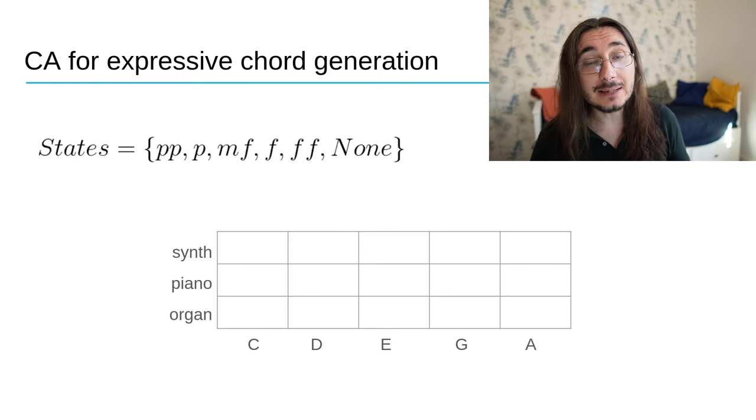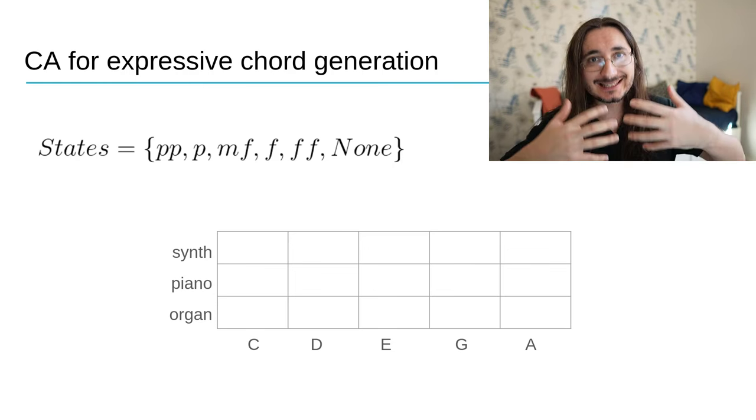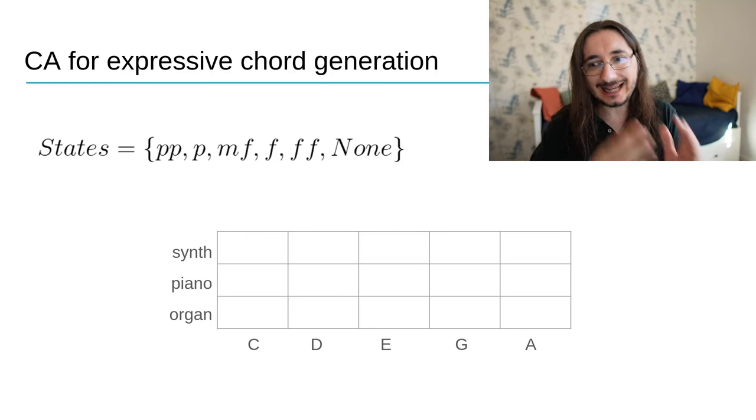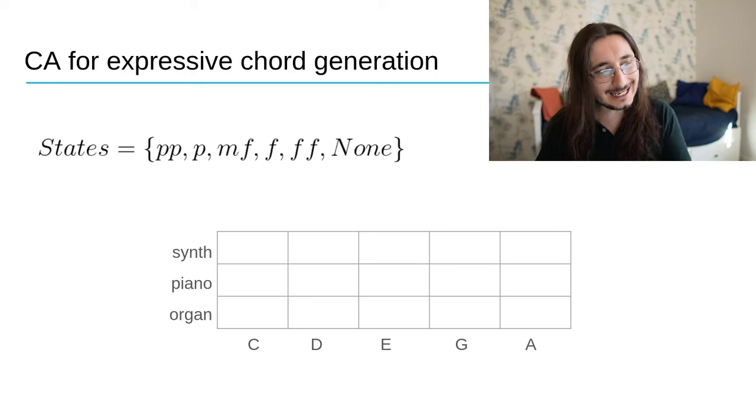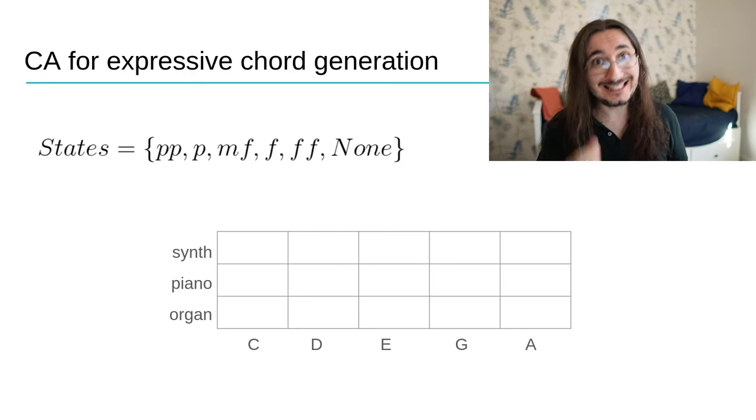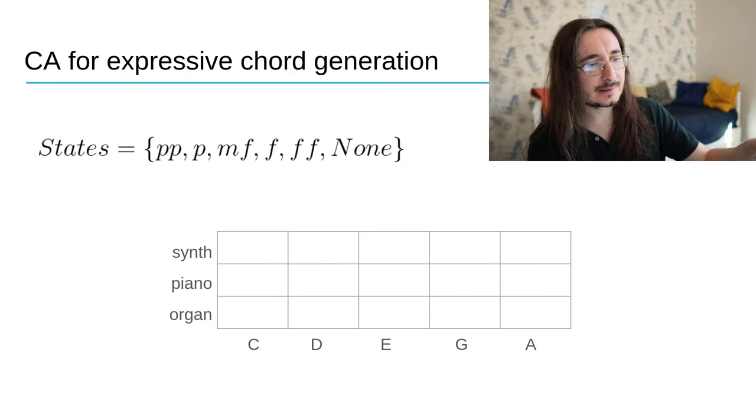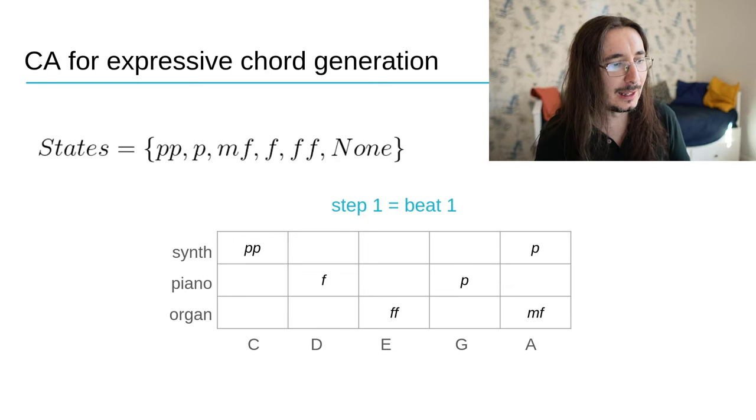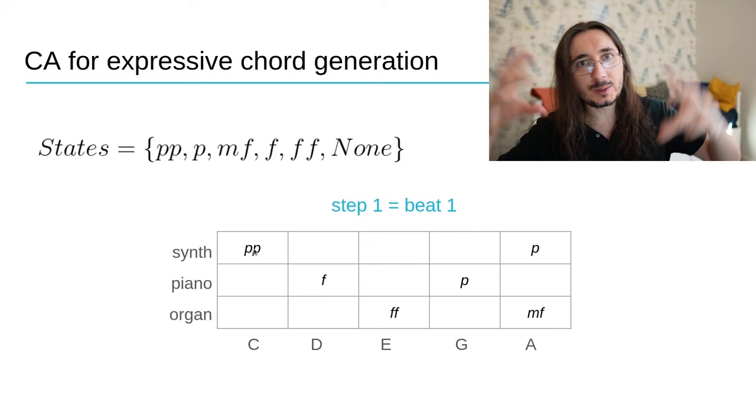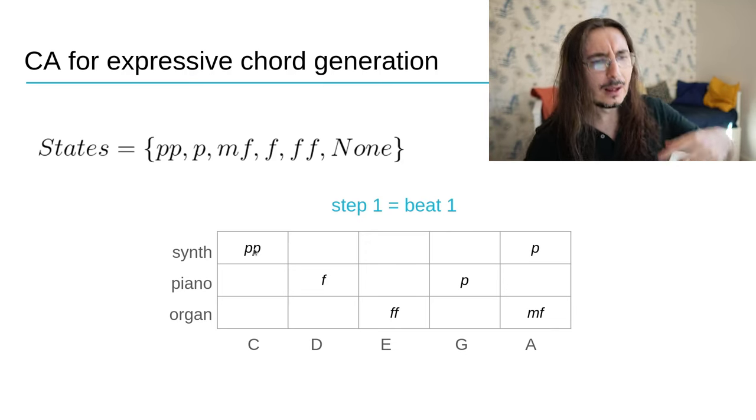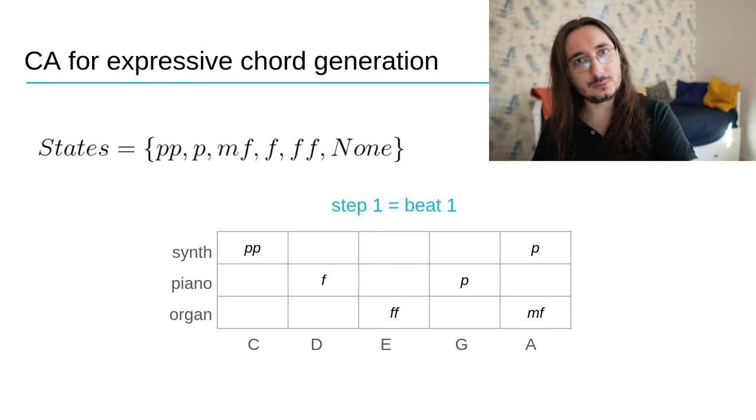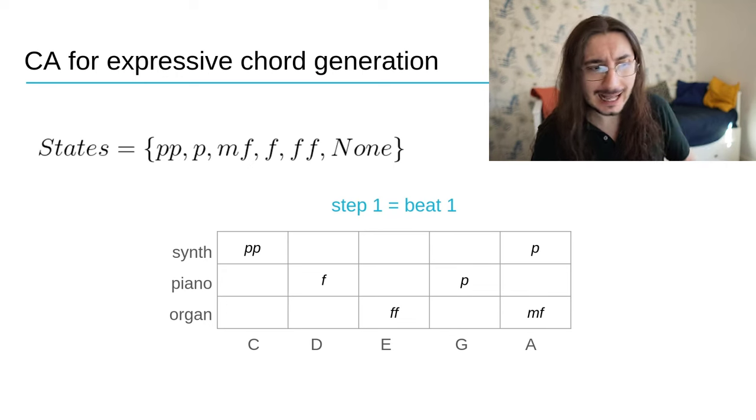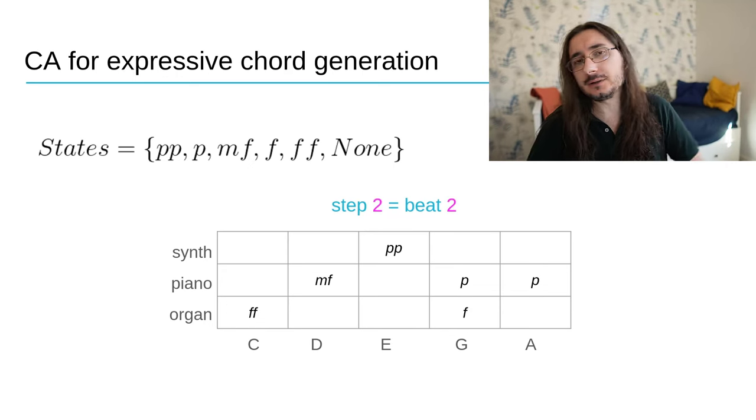What about time? Time is represented by the different steps, the different conditions the cellular automaton can take at different steps. And we could assume that each step represents a beat. Okay, so let's run this algorithm. And let's assume that we are at step one. This is beat one. And we have this arrangement of states for the different cells. Okay, now we can re-run the rules. And we're going to move to step two. And that is beat two in our representation. And of course, we're going to get another chord.